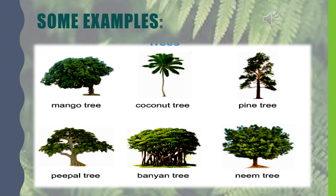Let us now learn about some common examples of trees. Mango tree, coconut tree, pine tree, banyan tree, peepal tree, and neem tree are some of the common trees in India. The juicy mango fruit that all of us like the most comes from the mango tree. You would have seen a mango tree in your neighborhood or in your village. The healthy coconut fruit that we eat comes from the tall coconut tree. I am sure you all must have seen a coconut tree.